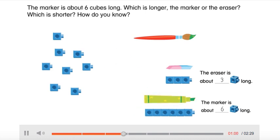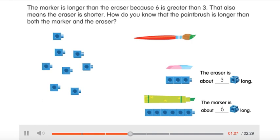Which is longer, the marker or the eraser? Which is shorter? How do you know? The marker is longer than the eraser because six is greater than three. That also means the eraser is shorter.